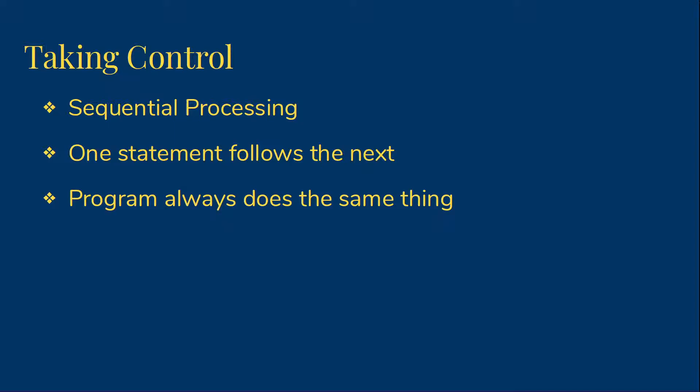Unless we do something to change it, our programs use what we call sequential processing. That means that the Java statements we write are executed in a sequence, each one following the next. As long as that's all we use, our programs can do complex things, but they always do the same complex thing. Since we have variables and can get data from the user, the data can be different, but our program treats all of the data in the same way.